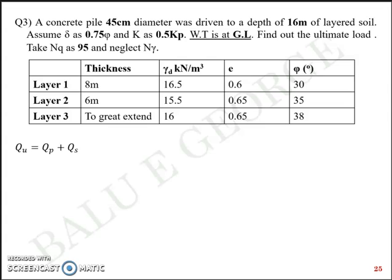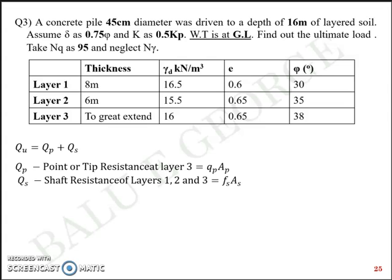You will have to find the ultimate load. So Qu is equal to Qp plus Qs. But Qp is the point or tip resistance at layer 3, which is qp into Ap at layer 3. Qs is the shaft resistance of layers 1, 2 and 3. So fs1·As1, fs2·As2 and fs3·As3 combined.